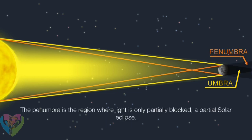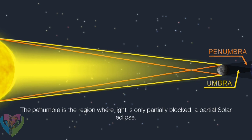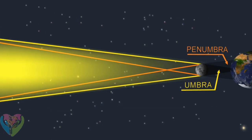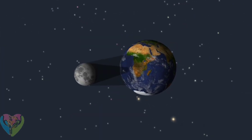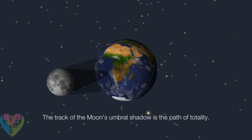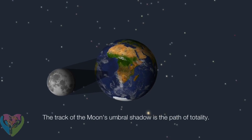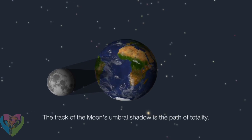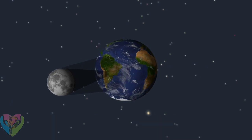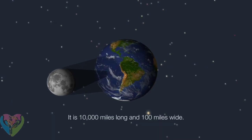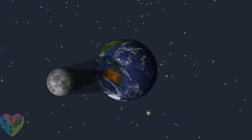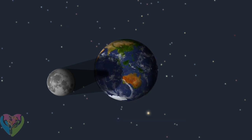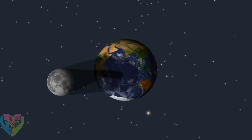The penumbra is the region where the light is only partially blocked — a partial solar eclipse. The track of the moon's umbral shadow is the path of totality. It is 10,000 miles long and 100 miles wide.